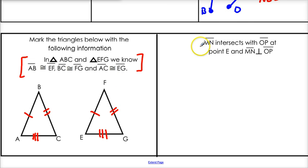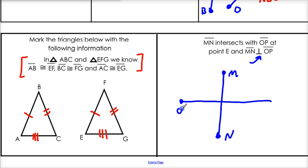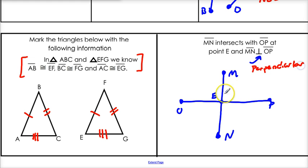Next example: MN intersects with OP at point E, and line MN is perpendicular to line OP. So how are we going to draw that? First we've got line MN, and we've got line OP, and they intersect. MN intersects OP at point E — so you've got to read carefully. Now, what's the last thing I have to put here to show that they're perpendicular? I've got to put that little box right there, because that tells me it's 90 degrees right there. That's how you mark things.